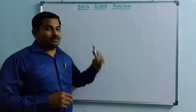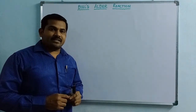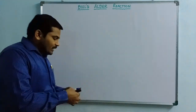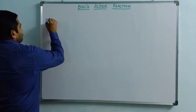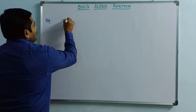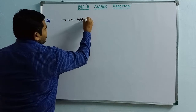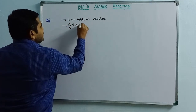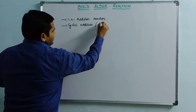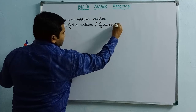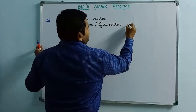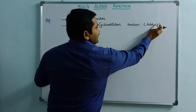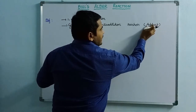Good evening friends. Today we will discuss one more name reaction called the Diels-Alder reaction. This is somewhat similar to Michael addition reaction because both are 1,4-addition reactions. In this reaction, a cyclic product is formed, hence it is also called a cycloaddition reaction. The product formed in this addition reaction is called an adduct.